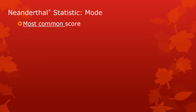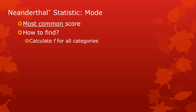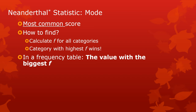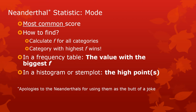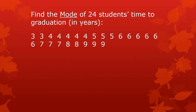So, Neanderthal statistics: the mode. This is an easy center, but it's also not very useful most of the time — it's kind of a dumb statistic sometimes. It is the most common observation, the most common score in a set of numbers. With a frequency table, you calculate the frequency for all categories and whichever has the highest frequency wins. In a histogram, stem plot, or stacked dot plot, you just look for the high point. The problem is there could be multiple high points, meaning you can get multiple answers, which leaves us in a weird mathematical place.